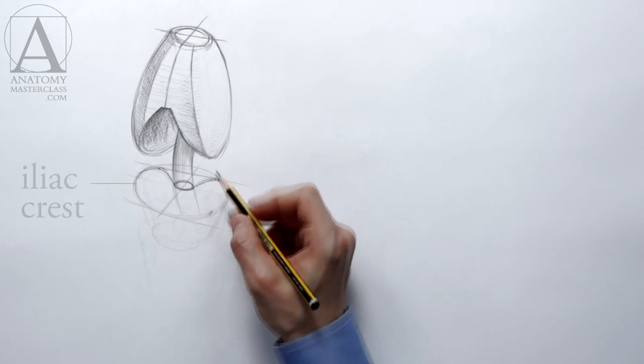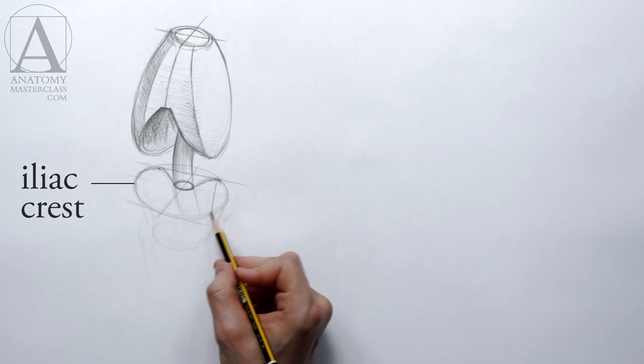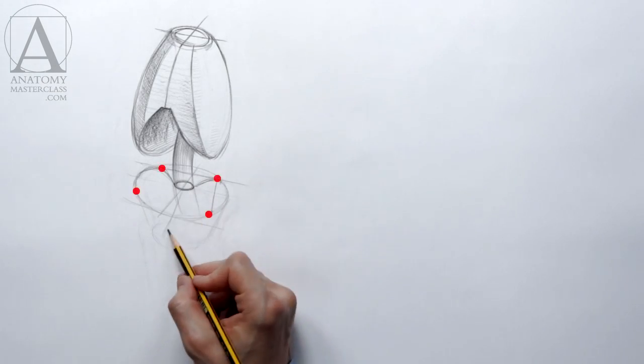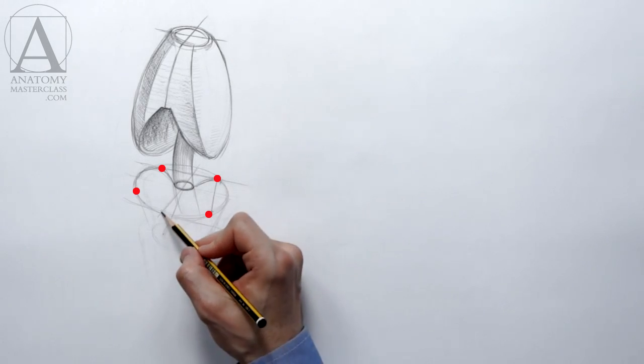The top ridge of the ilium bone is called the iliac crest. Four bumps of the crest are indicated in this location.